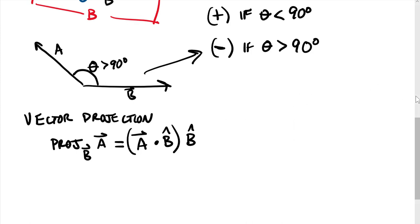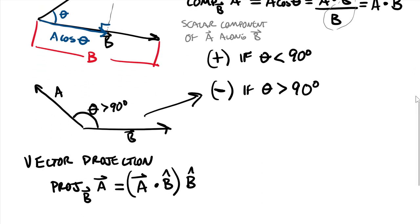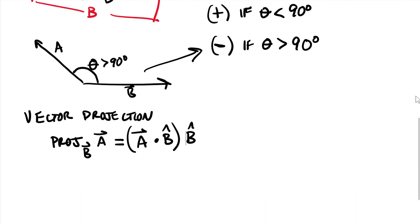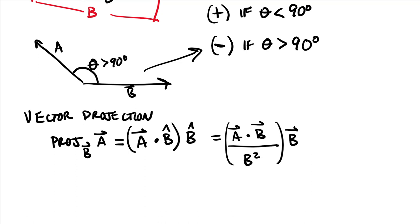Some problems ask for just the scalar component, others for the vector projection — pay attention to that. You'll see in your textbook a more complicated equation for vector projection: (a·b / |b|²) times b. But this is equivalent — hidden inside those two b vectors and b-squared are two unit vectors. Starting with unit vectors and multiplying by b-hat is the cleaner approach to get the vector projection of a along b.